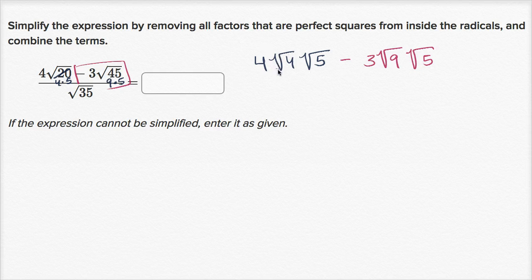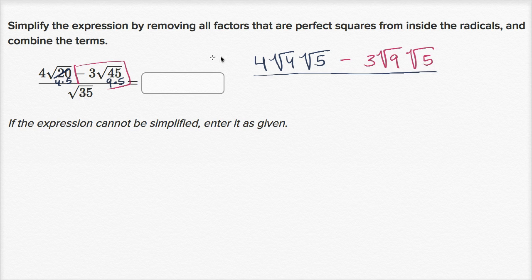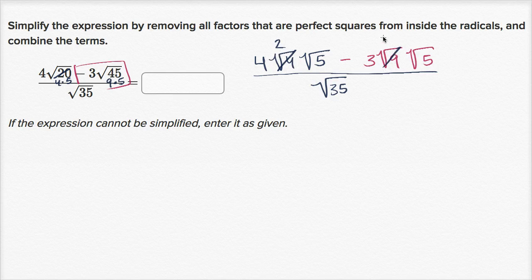And all of that is going to be over the square root of 35. Now, are there any perfect squares in 35? Well, 35 is seven times five — neither of those are perfect squares, so I'll just leave that as the square root of 35. The square root of four is two, since we're taking the principal root — the positive square root. And the square root of nine is three.